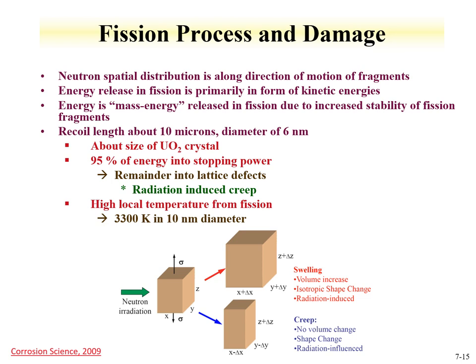The fission process also causes damage in reactor materials. Fission products recoil about 10 microns in UO₂, creating a very high local temperature — almost 3000°C in a 10-nanometer diameter region within the fuel. Two types of radiation damage can occur: swelling, where each axis of a material increases, and creep, where there is shape change without volume change. There is significant new research focused on finding materials that are impervious to swelling and creep from neutron damage.